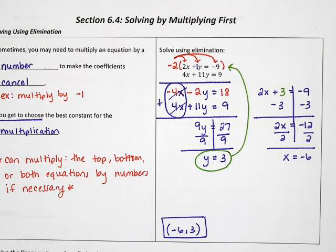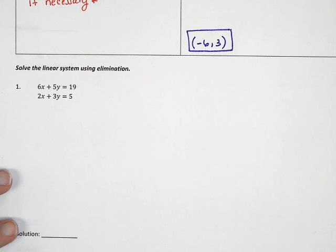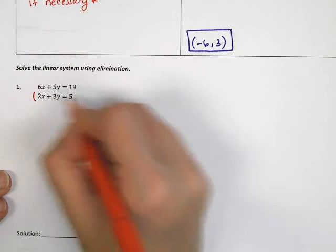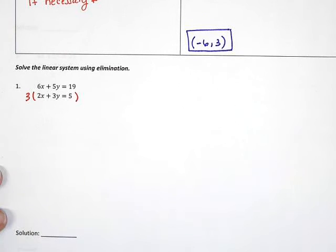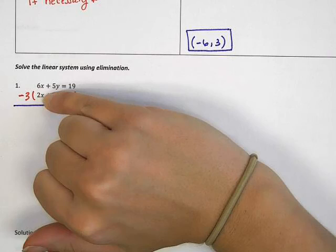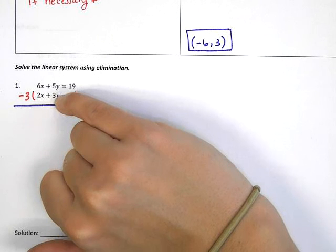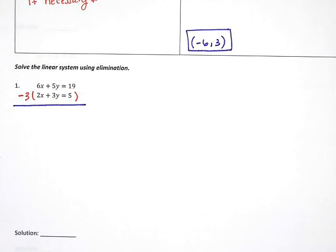Let's take a look at another example. For example 1, I want to use elimination, so I need to make sure everything is lined up — the x's, y's, equals, and numbers all line up. None of the numbers here are going to cancel: 6 doesn't cancel 2, and 5 doesn't cancel 3. But I could make that happen — I can turn the 2 into a 6 by multiplying by 3. But I also need that number to be negative, so I'm going to multiply by negative 3. If I want the x's to cancel, 2 times 3 gives me 6 — that's the easy one. 3 times something will never give me 5, so that approach is more difficult.